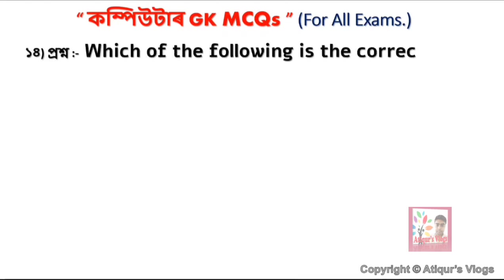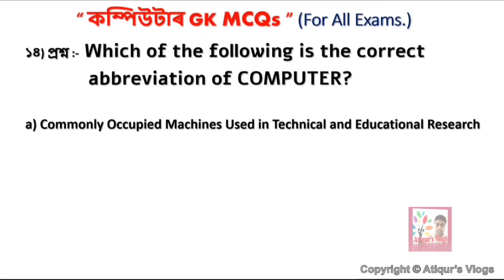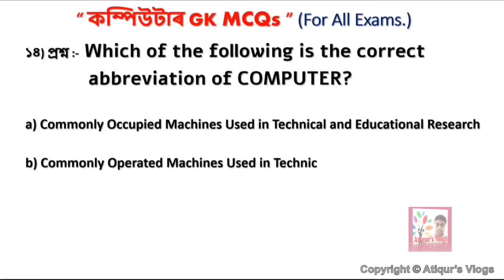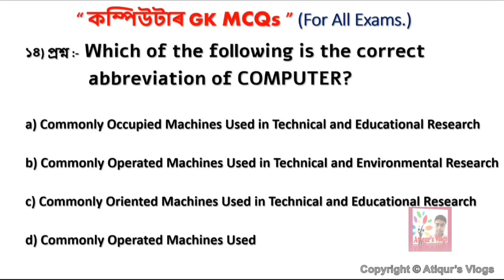Question 16: Which of the following is the correct abbreviation of COMPUTER? Option A is Commonly Occupied Machines Used in Technical and Educational Research, option B is Commonly Operated Machines Used in Technical and Environmental Research, option C is Commonly Oriented Machines Used in Technical and Educational Research, and option D is Commonly Operated Machines Used in Technical and Educational Research. The correct answer is option D.